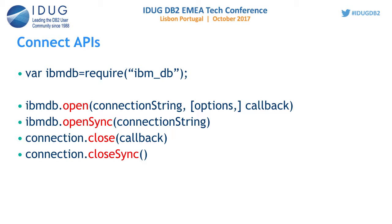Being asynchronous means fire-and-forget. You call ibm_db.open and then it moves on to the next statement. When the open API returns a connection object, it passes that connection object to the callback function, and your logic will be within the callback function based on the connection.